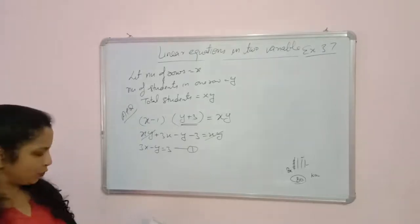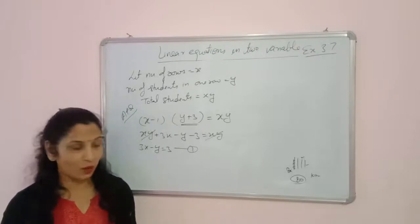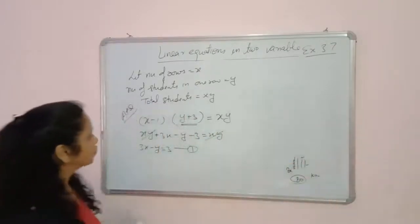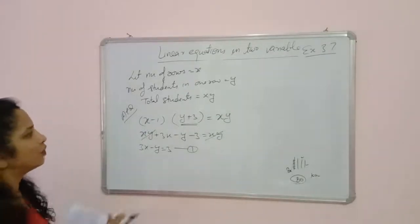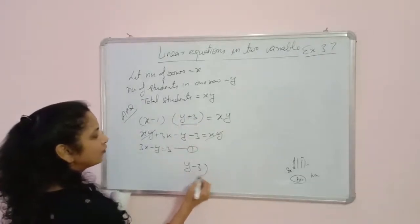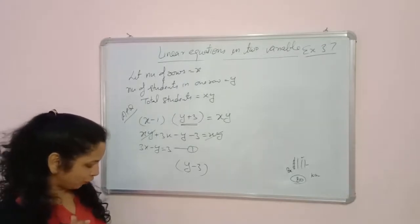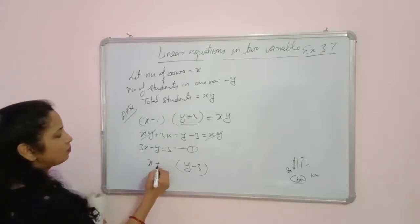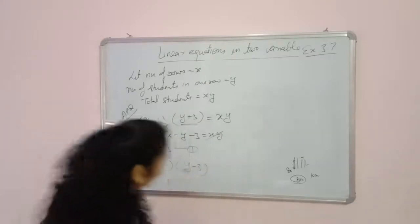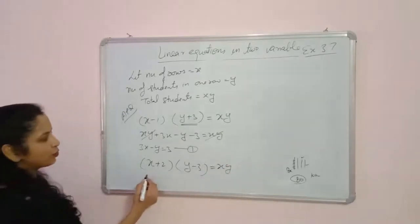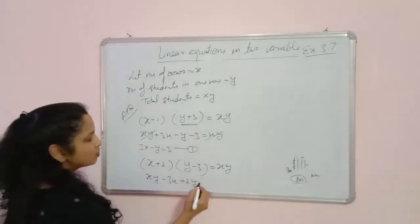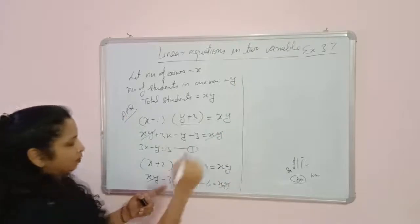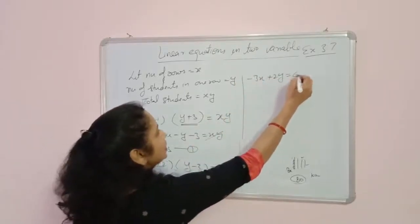Second condition: 3 students less per row means 2 more rows. Number of students per row becomes y minus 3, and rows become x plus 2. Expanding (x plus 2)(y minus 3) equals xy: xy minus 3x plus 2y minus 6 equals xy. Cancelling xy gives equation 2: minus 3x plus 2y equals 6.